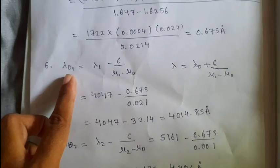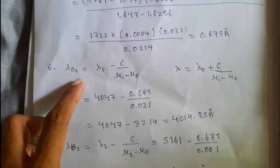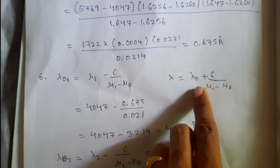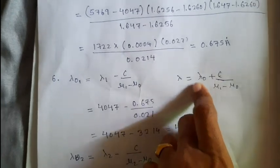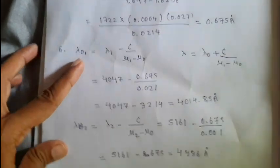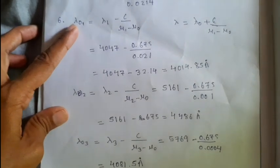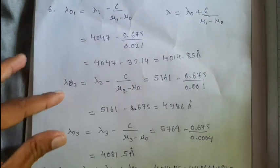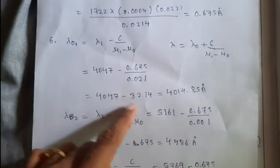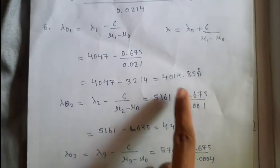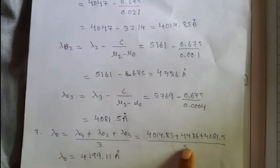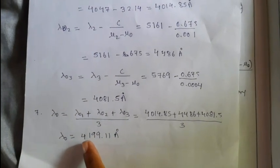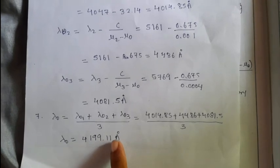Go for calculating the Horstman dispersion constant lambda 0 with the formula: lambda equals lambda 0 plus c divided by (mu 1 minus mu 0). Calculate lambda 0 for all three colors, taking values as lambda 0 one, two, and three. Then add them and divide by 3 to take the average. You will get the value of lambda 0, which is 4199 Angstroms.